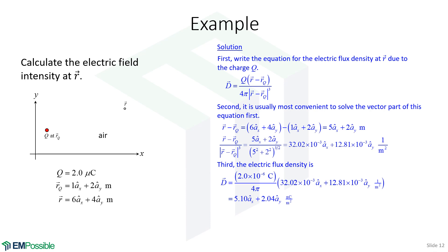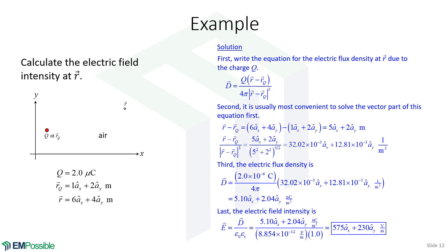It would be an easy mistake to say we got the electric field and we're done, but the problem asked for the electric field intensity — not the electric flux density. Don't get those confused. We use the constitutive relation: the electric field intensity is the electric flux density we just calculated, divided by the permittivity — written as the product of the free-space permittivity times the relative permittivity, also called the dielectric constant. Since this is air, the relative permittivity is just 1.0. We throw this into our calculator and out comes an expression for the electric field intensity.